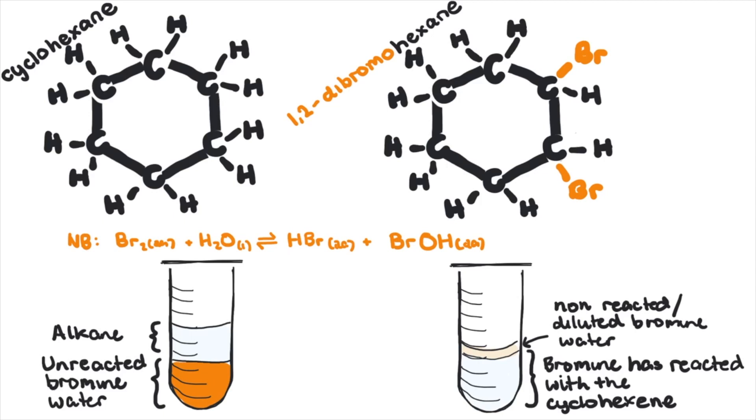Also, if you shook up the mixture of cyclohexane and bromine water and you let that settle again, you'd find that the colour which was originally at the bottom would have shifted to the top and changed to a more cordial orange colour.